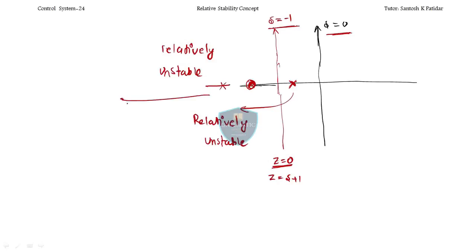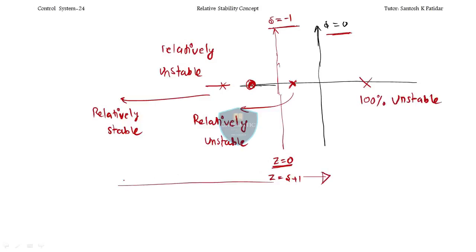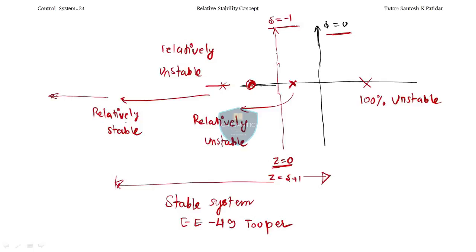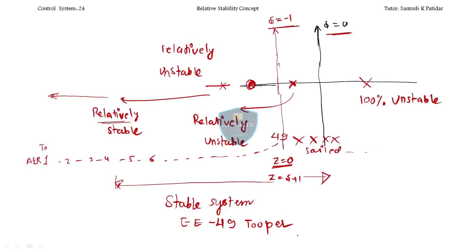If your poles are in the RHS beyond S = minus 1, the system is 100% absolutely unstable. But if all poles lie between S = 0 and S = minus 1 (i.e., in the LHS of origin but to the right of minus 1), the system is stable — like all 49 IES toppers. As poles move further into the LHS, the system is relatively more and more stable. AIR 1 is at the far left, then AIR 2, AIR 3, and so on, with the 49th closest to the boundary. Those outside are failed — unstable.